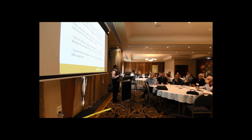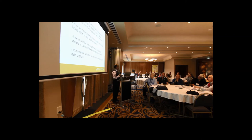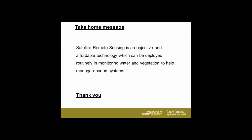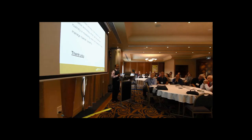Commercial satellites provide quite a lot of flexibility of access. For example, RapidEye has a constellation of five satellites — if you order, within a day or two you could get a picture of your area. There is some cost associated with commercial satellites. My closing message: satellite remote sensing is an objective and affordable technology which can be deployed routinely in monitoring water and vegetation to help manage riparian systems. Thank you.